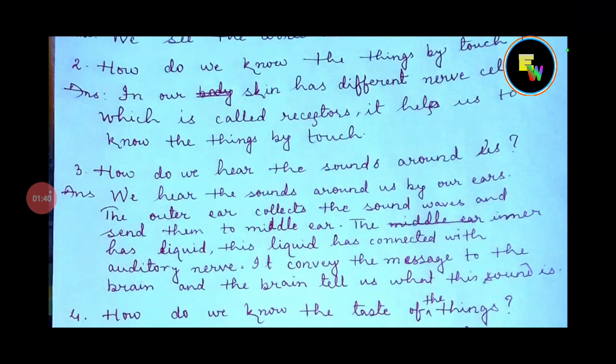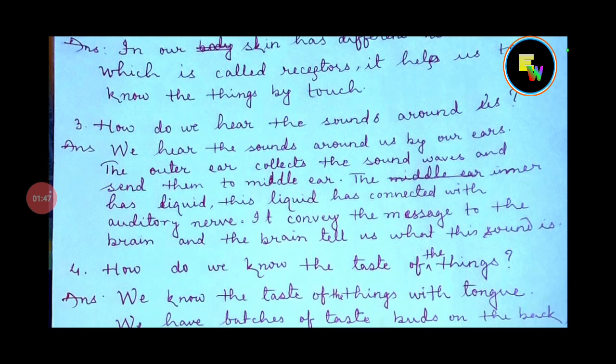Question number 3: How do we hear the sounds around us? We hear the sounds around us by our ears. The outer ear collects the sound waves and sends them to the middle ear. The inner ear has liquid, which is connected with the auditory nerve. It conveys the message to the brain, and the brain tells us what this sound is.